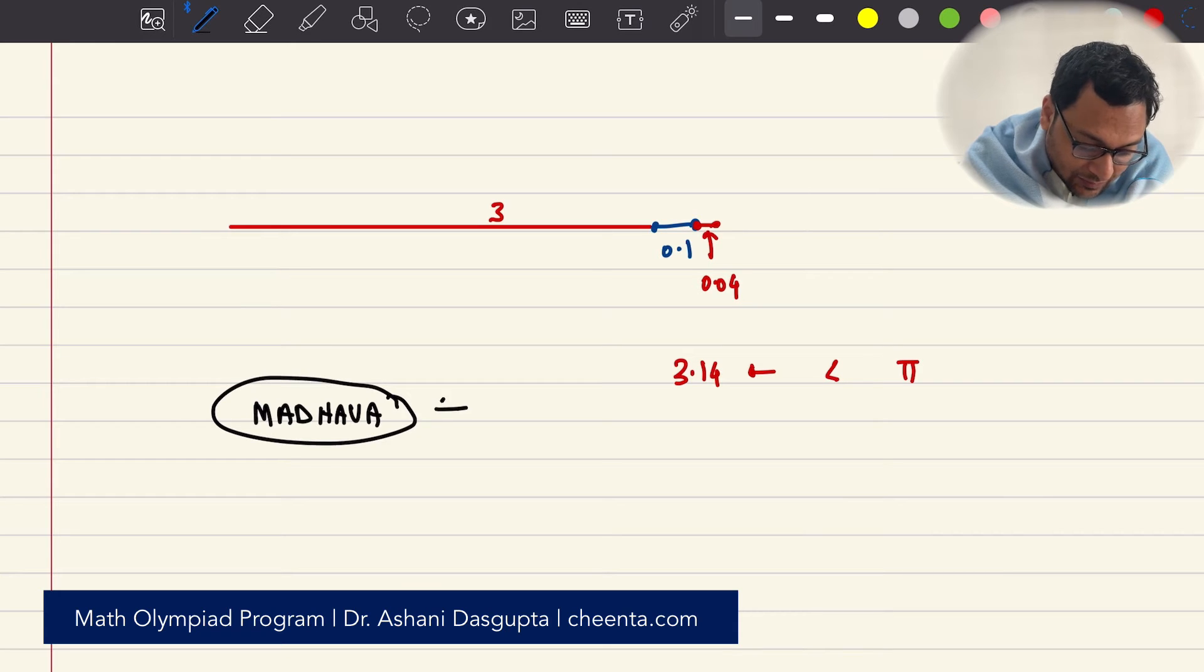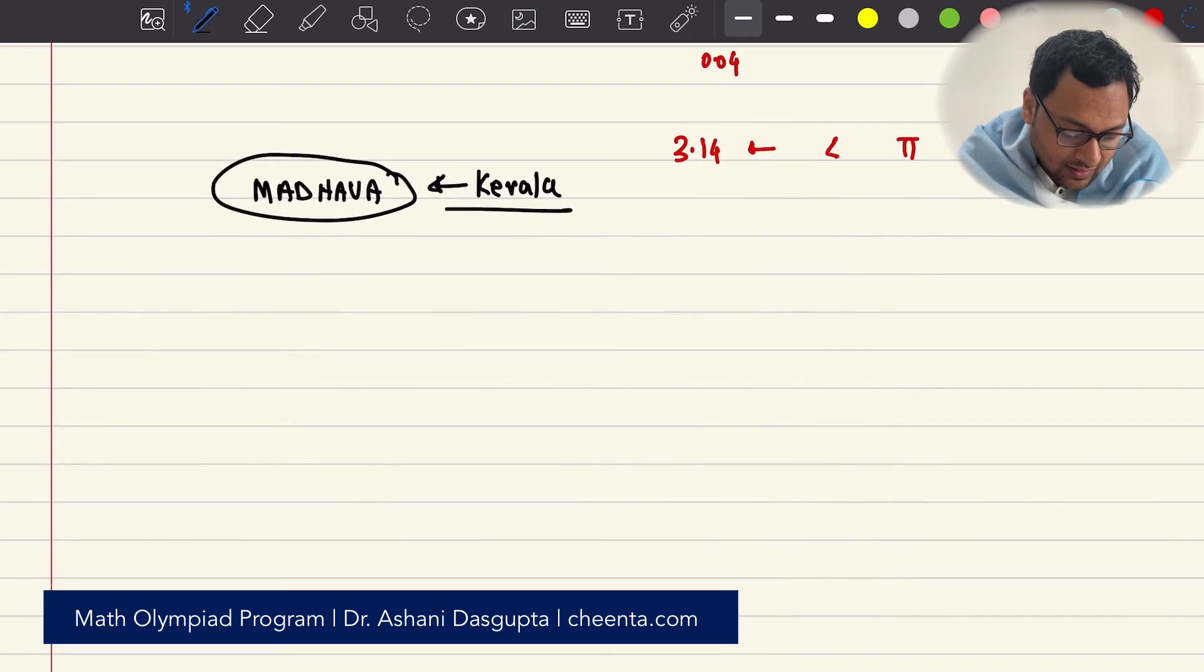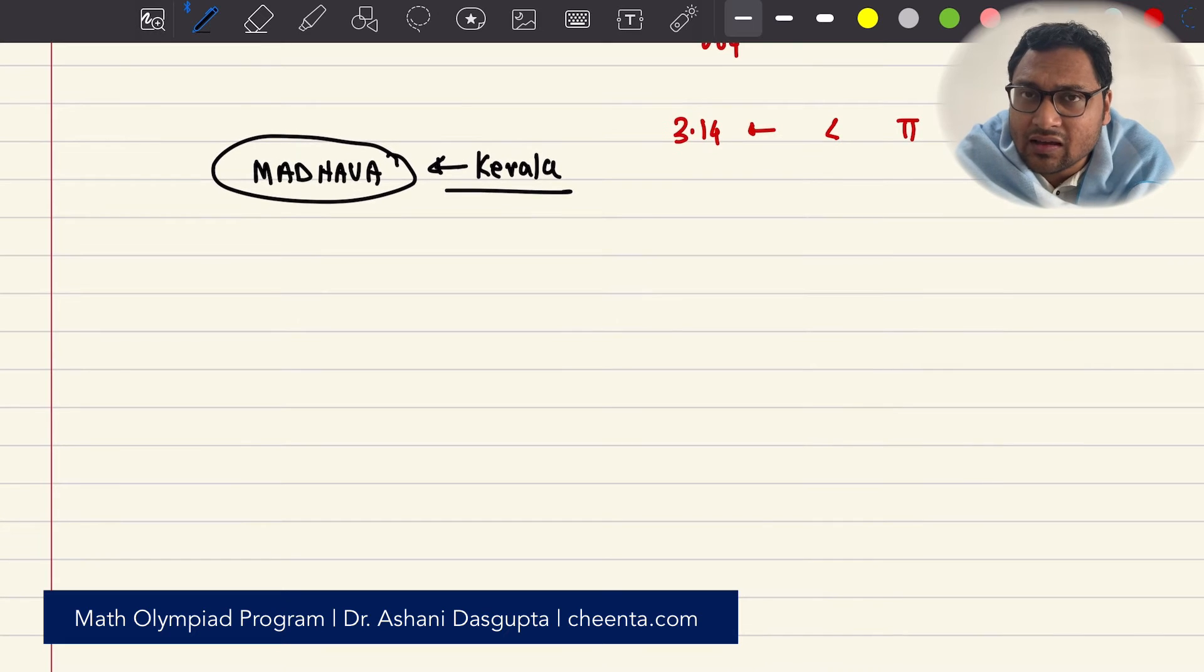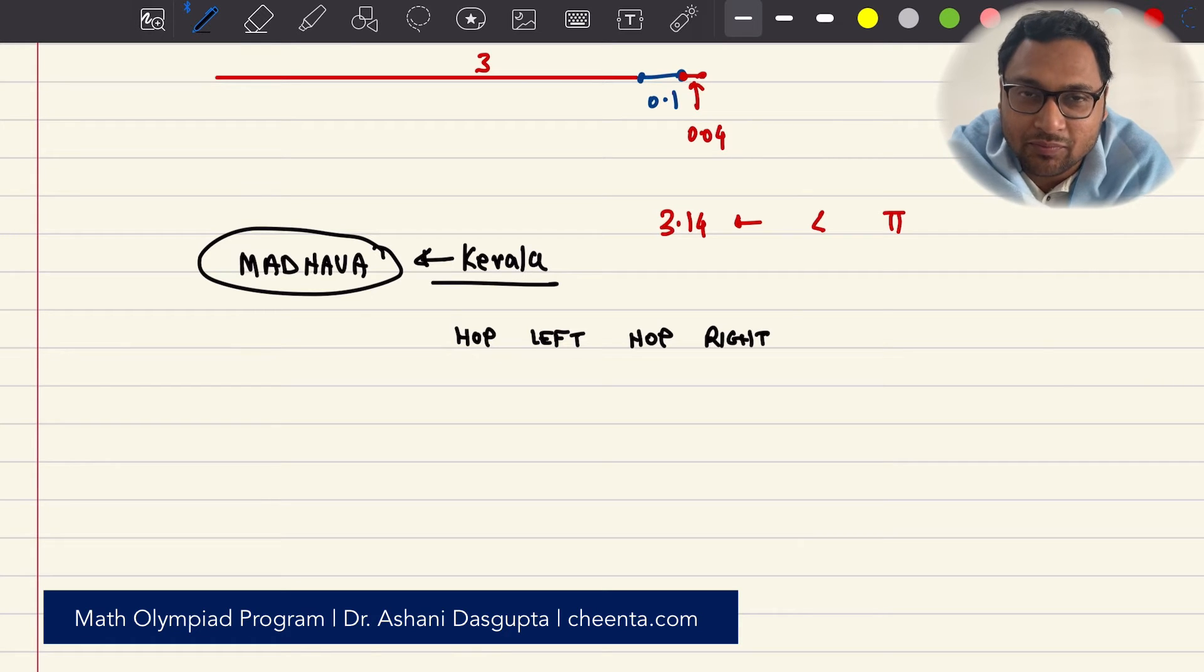So he was a mathematician from Kerala, which is a part of India, in the southern tip of India. And he discovered something outstanding that changed mathematics forever. Instead of approaching pi from the left, he did this hop-left, hop-right approach.